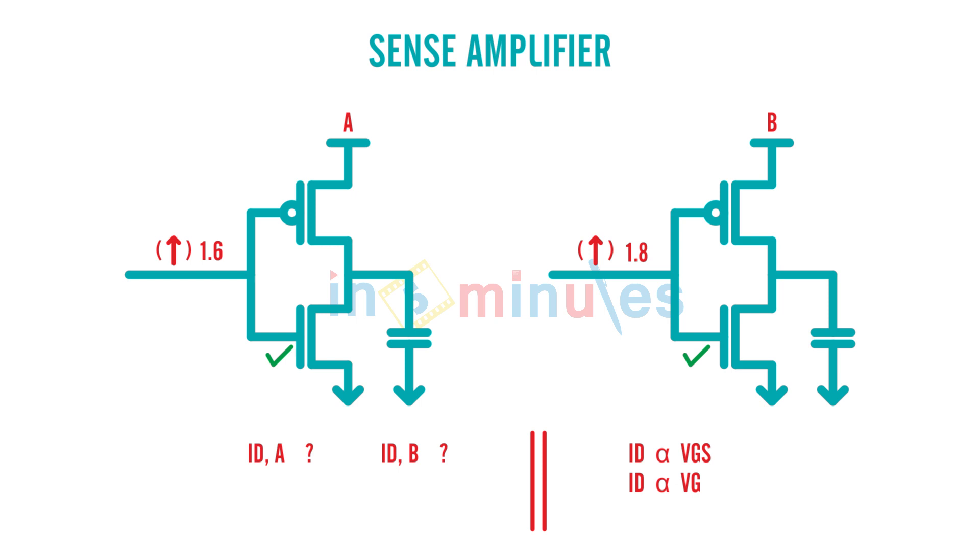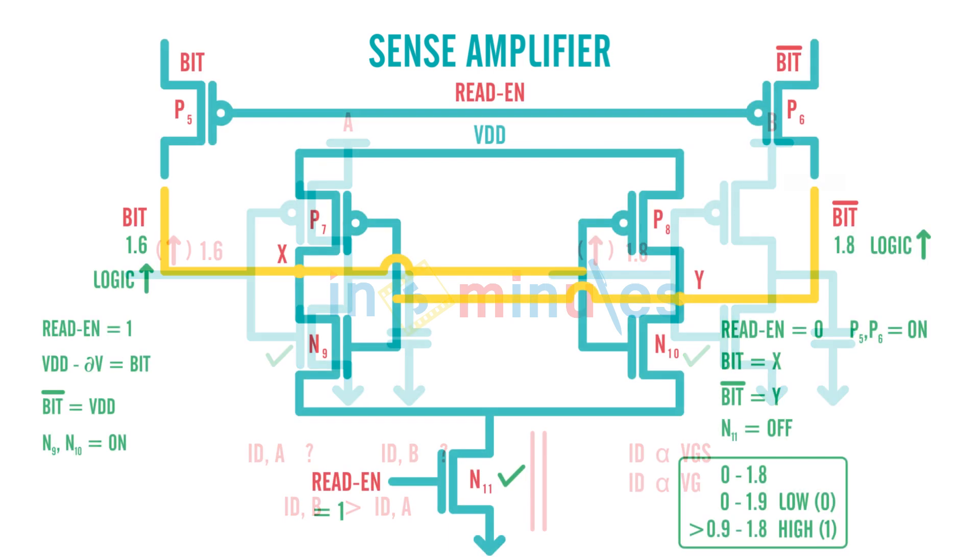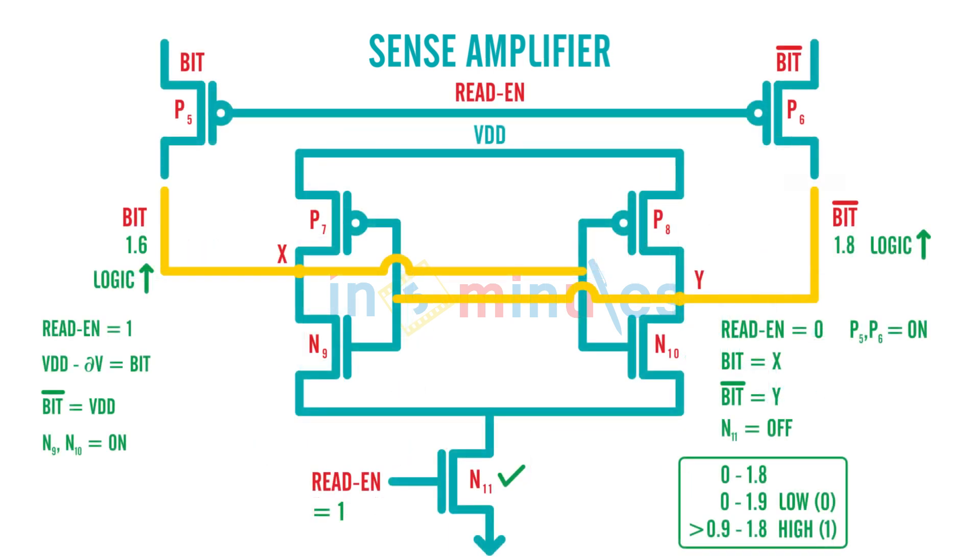In this case, it's going to be inverter B will have ID discharging its output capacitance to 0 faster than ID of A. Now let's go back to our previous circuit. Here x is at 1.6, y is at 1.8, n9 and n10 being both on.